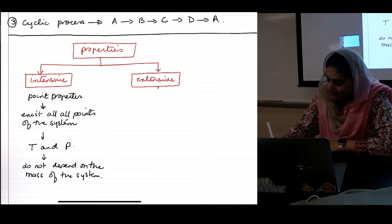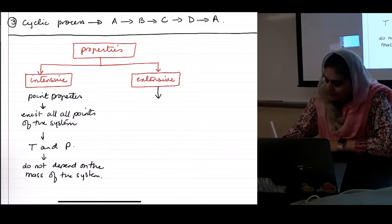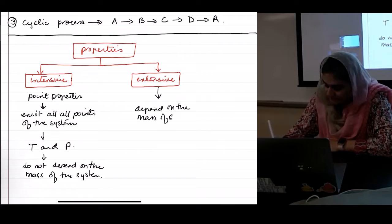Extensive properties, on the other hand, depend on the mass of the system. And these include things like volume.